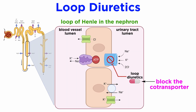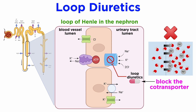Loop diuretics block the NAKCl cotransporter, which drastically reduces the nephron's ability to establish this water potential gradient across the cells lining the collecting duct. Therefore, much less water is able to be reabsorbed, lowering blood pressure significantly while urine flow is heavily increased.